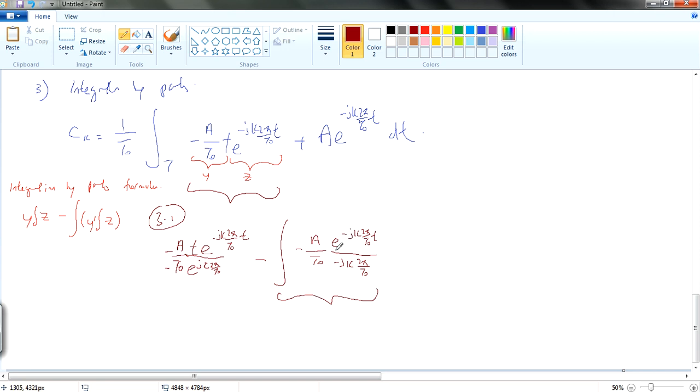And this portion will become A e... and make sure that you know that this will cancel, will become positive. So this dude will become positive. Therefore this will become plus and this will become plus. For this portion, A T0 e^(-jk 2π/T0 t).